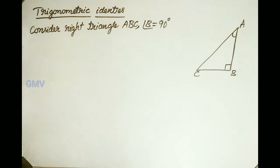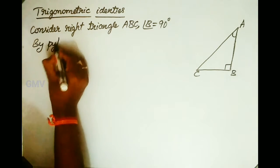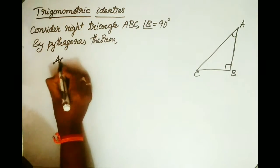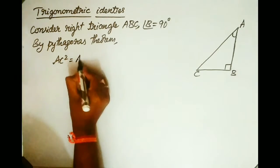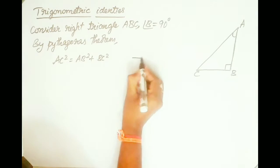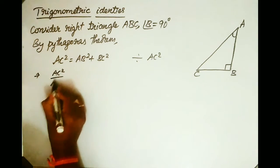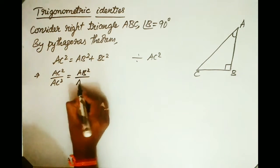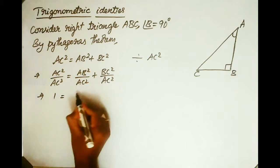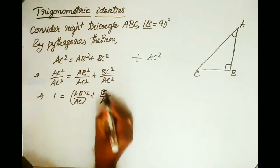Consider right triangle ABC where angle B is equal to 90 degrees. By Pythagoras theorem, we know that AC squared equals AB squared plus BC squared, where AC is the hypotenuse. Now dividing the whole equation by AC squared, we get AC²/AC² = AB²/AC² + BC²/AC², which implies 1 = (AB/AC)² + (BC/AC)².